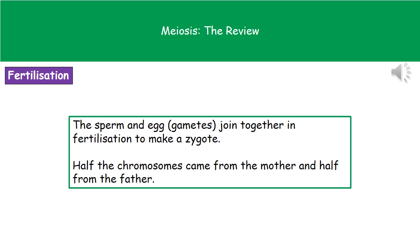The process of fertilization is when the sperm and the egg cell join together and their nuclei have fused. Once that takes place, what we've made is something called a zygote. In that zygote, half of the chromosomes came from the mother and half of them came from the father.